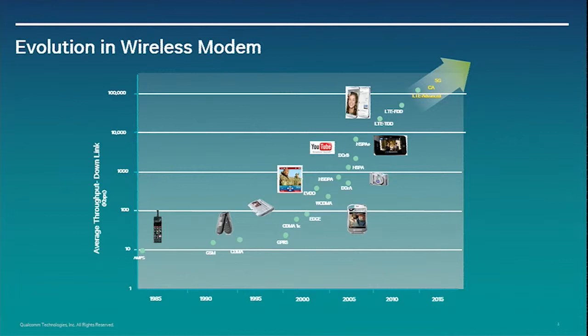My intent was not to include this to give you a comparison between these different access points, but to show you the evolution. Starting around 1985, or slightly earlier, we had the analog AMPS technology. The evolution over 20 to 30 years was mainly driven for better throughput. I'm referencing them as average throughput, more on the downlink in particular.